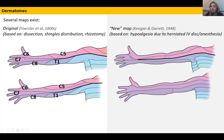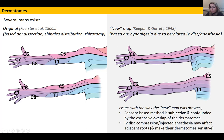The newer map — the Keegan and Garrett map, newer I say but it is from 1948 — was based on a slightly different method. He recruited several medical students and others and anaesthetised specific nerve roots. He also looked at people with herniated intervertebral discs and examined the distribution of reduced pain perception (hypoalgesia) in the skin to draw out these maps. Some would assume the newer map is more accurate, but there's quite a lot of controversy. Issues include that the method is subjective — based on the person's perception of pain and sensation — and the dermatomes are not discrete strips; there's quite a lot of overlap.